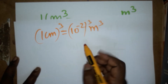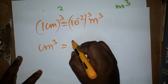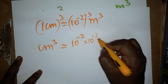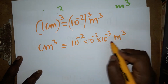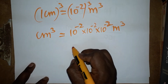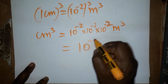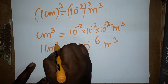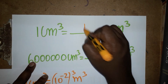Now we have centimeter cube, so we just cube this value on both sides. 1 centimeter cube equals (10 power minus 2) cubed meter cube. Multiplying the exponents: minus 2 times 3 gives 10 power minus 6. Therefore, 1 centimeter cube is equal to 10 power minus 6 meter cube.